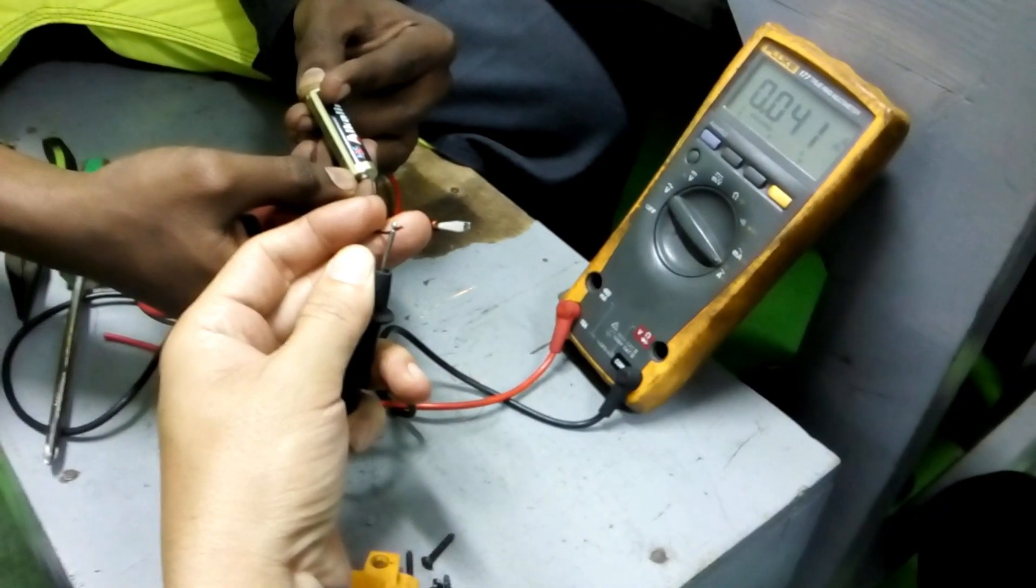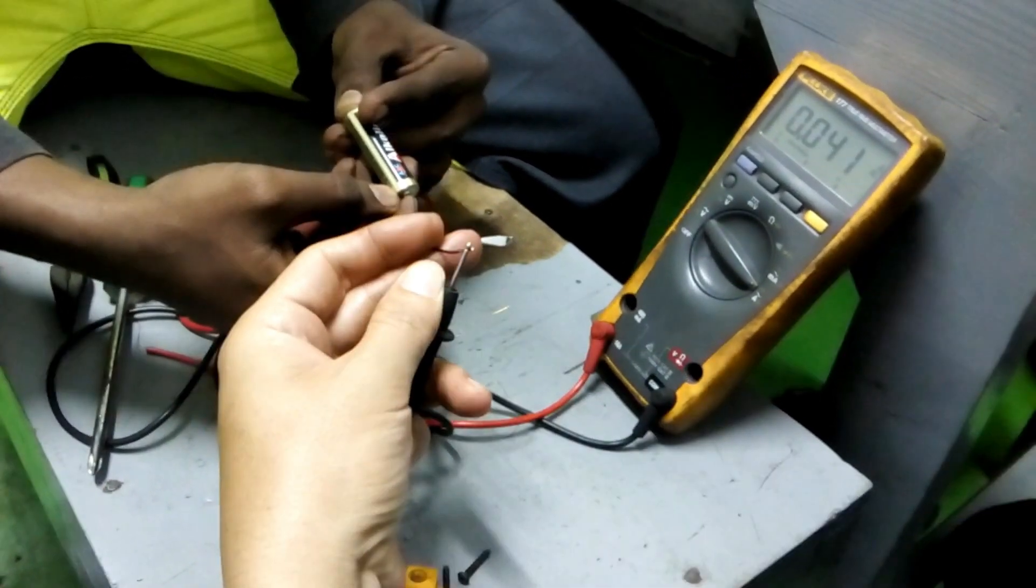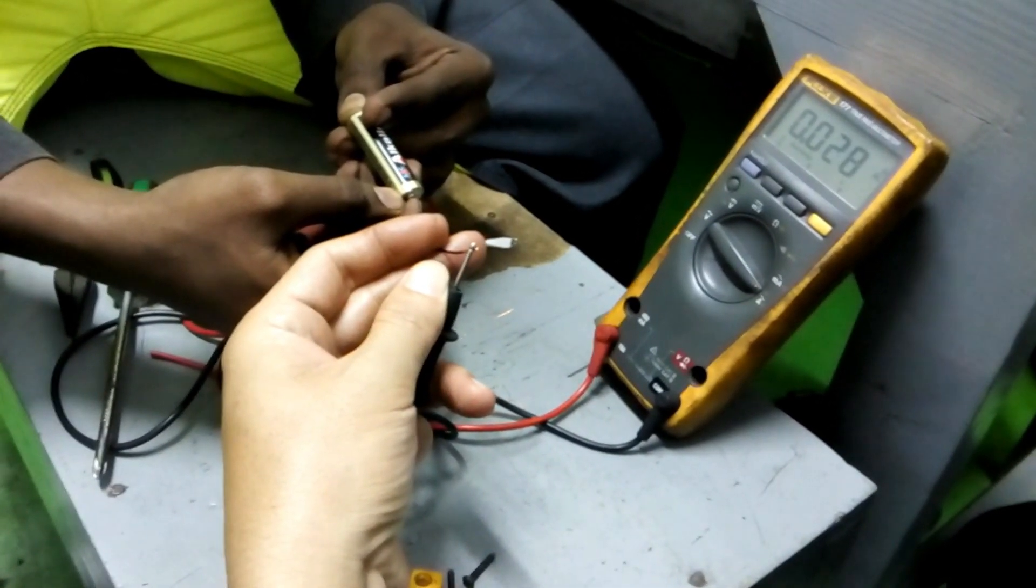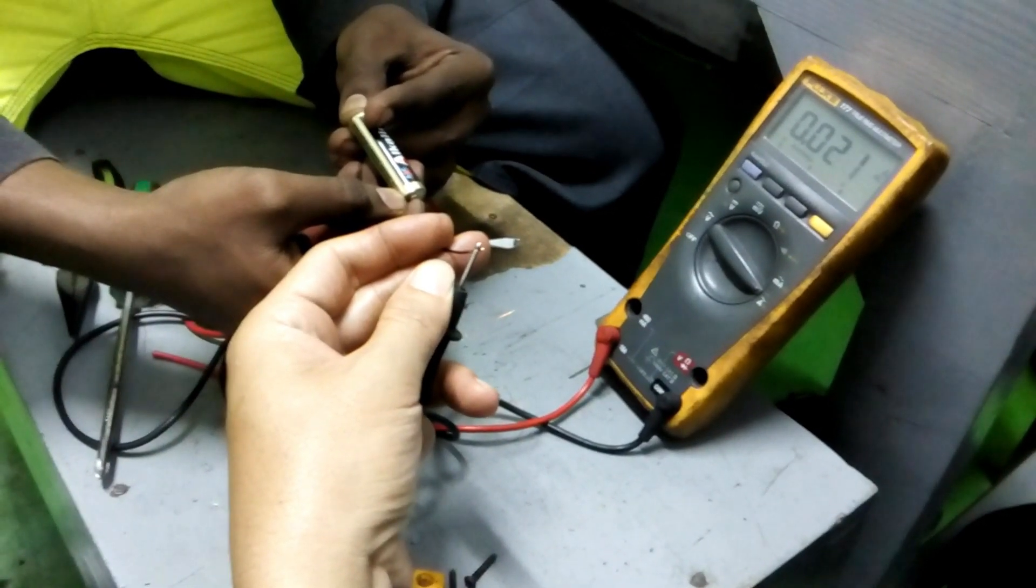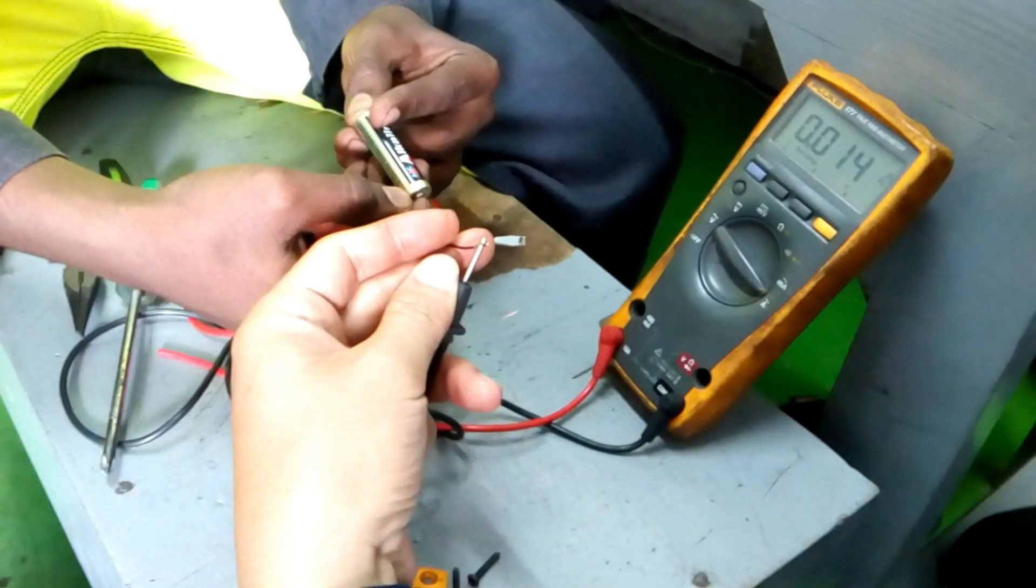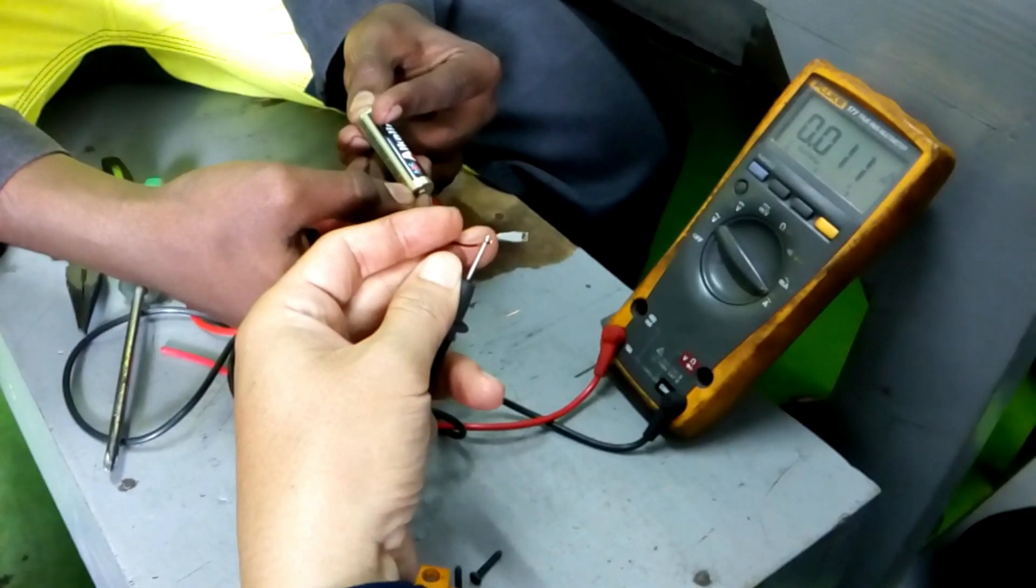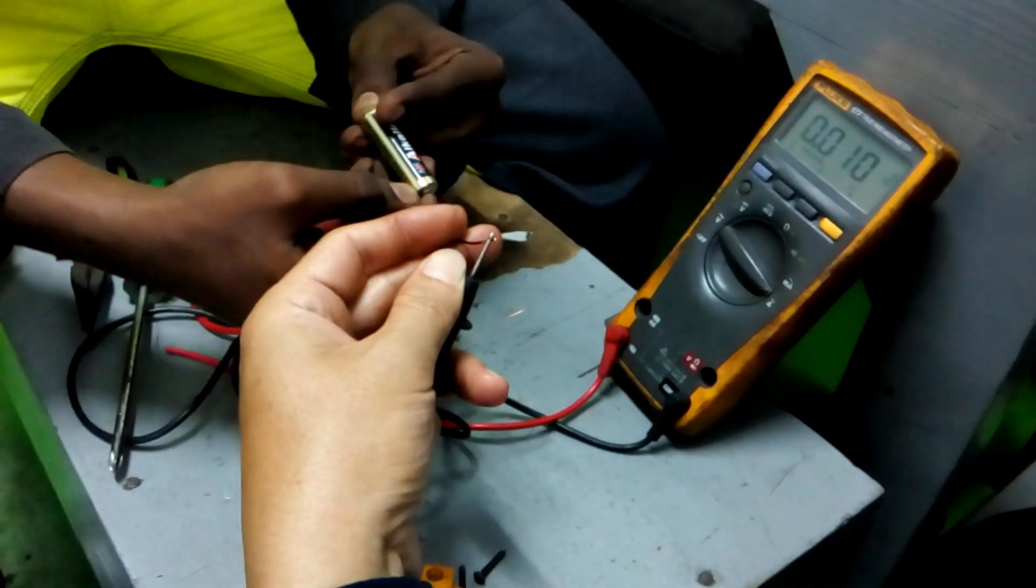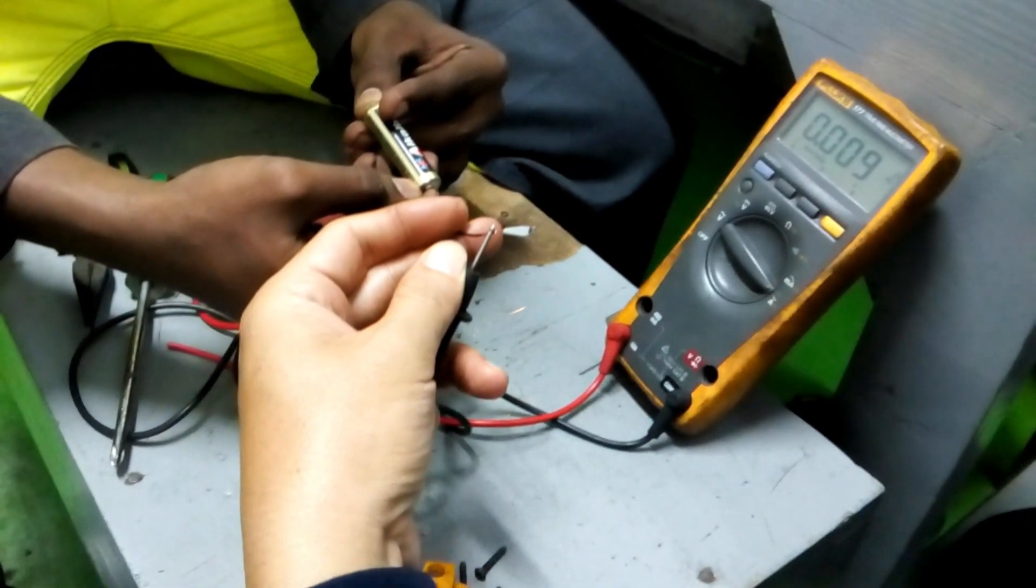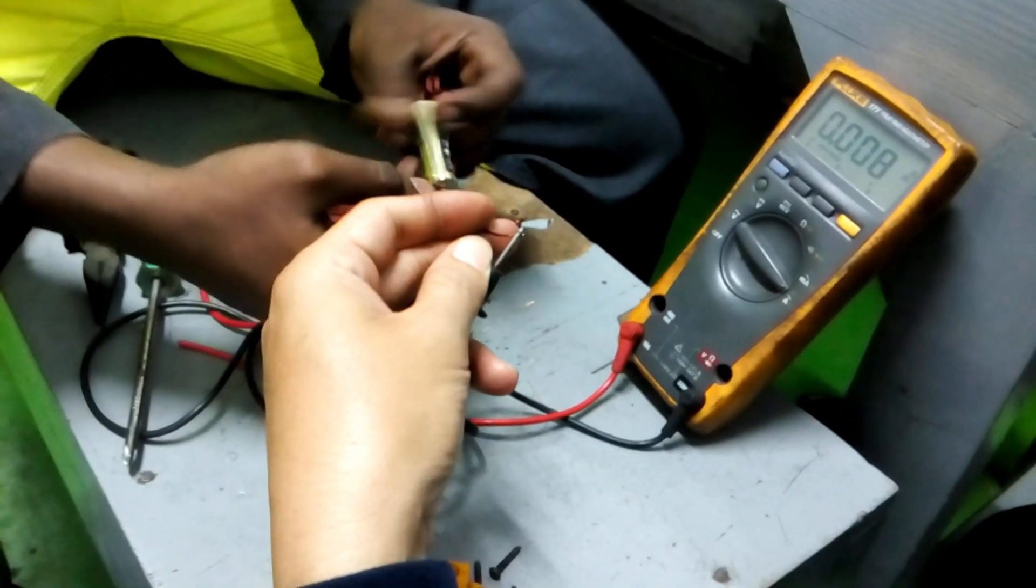This is because when the current flows in the coil, it produces flux. Due to this, the iron gets magnetized. This magnetic field affects the current flowing into this coil, so the current is reduced here. This is a small demo just to get more understanding.